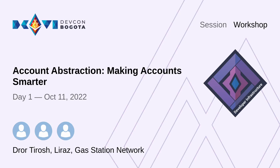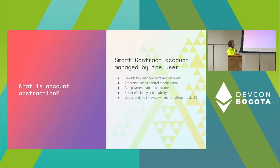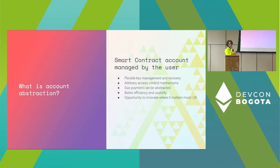By abstracting away, we mean it is not the node that performs the operation—checking the signature, checking security, checking the balance, performing the payment—but we abstract it away and make a wallet contract responsible for all of these. Key management becomes simpler because the wallet can manage keys itself. The easiest way to think about this is making wallet contracts first-class citizens. You don't need an EOA to operate your contract wallet—you can start from a contract wallet and never need an EOA.